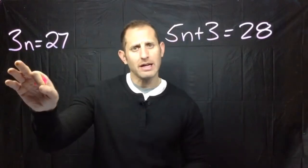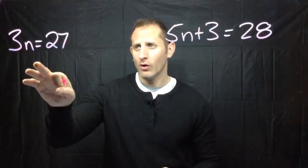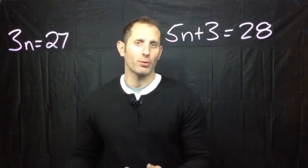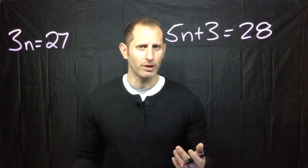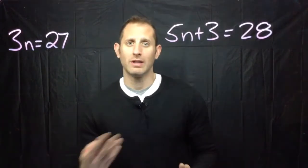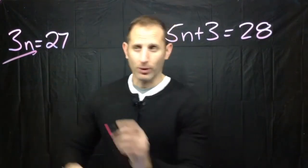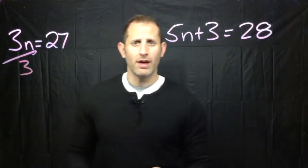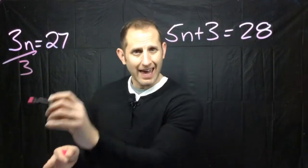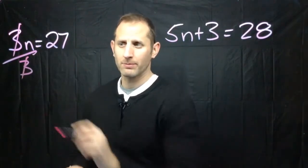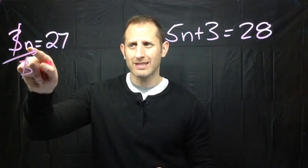Well if we've got three groups of n what we need to do is get rid of three groups. And how do we get rid of three groups? Well we do its opposite. We divide. So if we were to take this and divide it by three groups then what we are able to do here is cancel out the threes. And that leaves us with a single n.